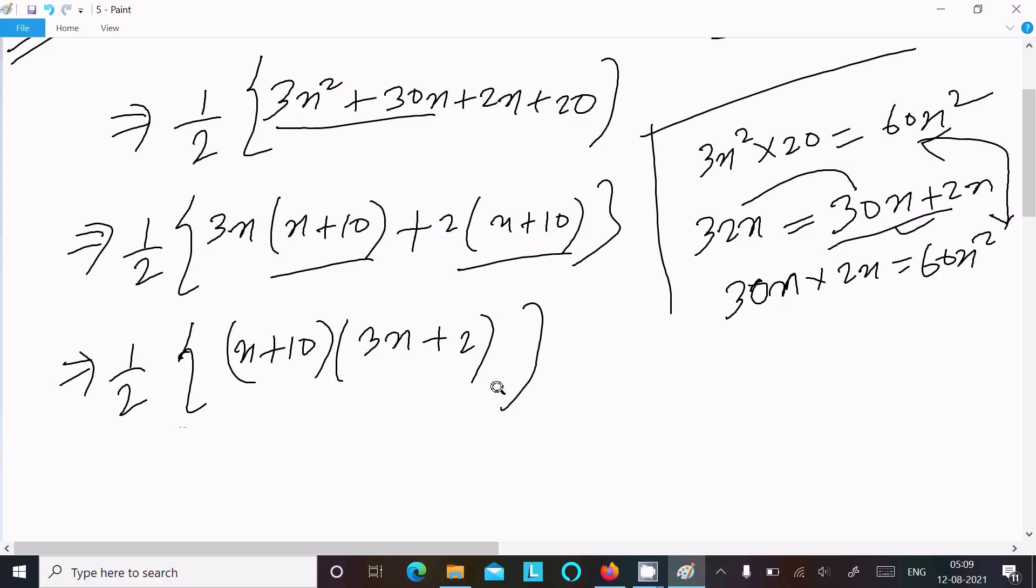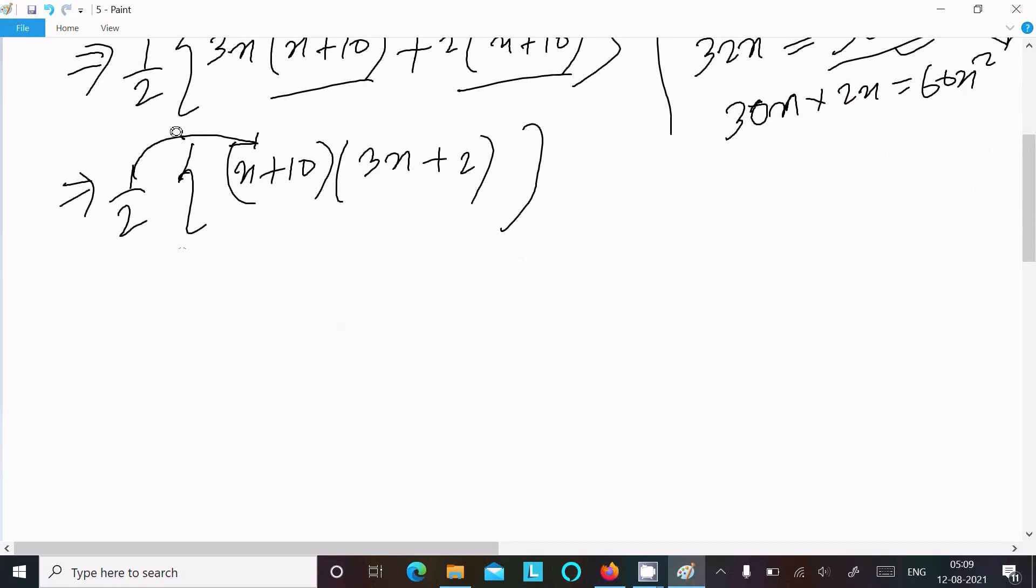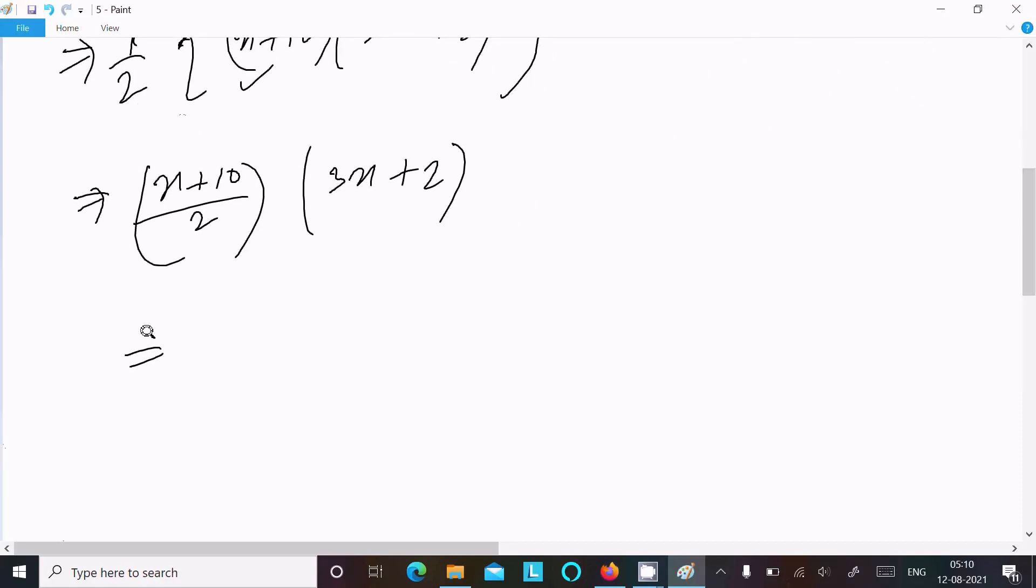Now thereafter, here this is the term you can get. After that, 1/2, either you can multiply with this one or that one. So if I multiply with that one, so here x plus 10 divided by 2, this here 3x plus 2. Now we can write x/2 plus 10/2, 3x plus 2. Or you can write x/2, 10/2 it cancels by 5 times, so this here 5, and here 3x plus 2.